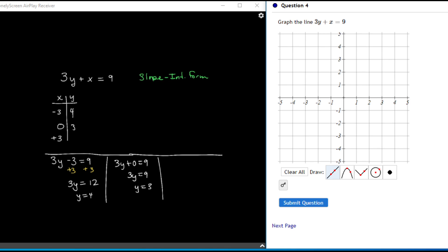The last one, I'm going to plug in positive 3. So it's 3y plus 3 equals 9. I subtract 3 from both sides. 3y equals 6. Divide both sides and I get y equals 2. Then I can plot any of those points.